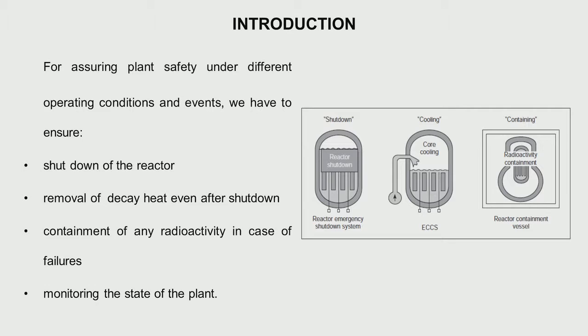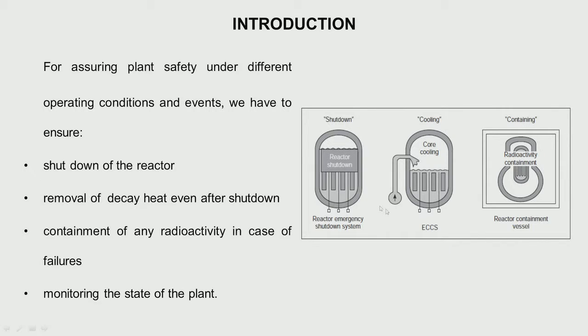The chain fission reaction has been stopped, but still heat is getting produced in the reactor due to the decay of the fission products generated during fission. This decay heat is of the order of 6–7% immediately after shut down and goes down very gradually. So we need to cool the reactor — we need coolant flow through the core at a partial level to keep the clad and fuel temperature within limits.